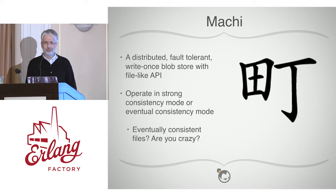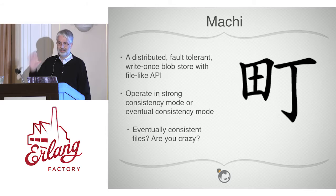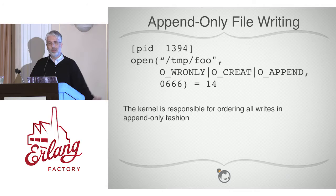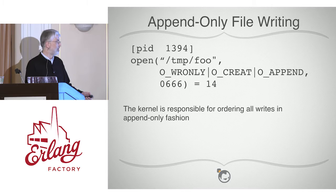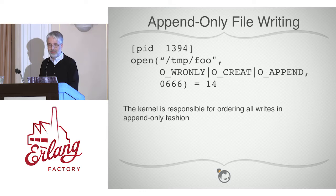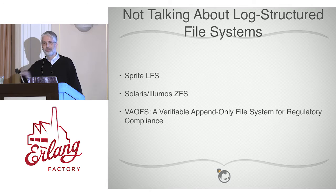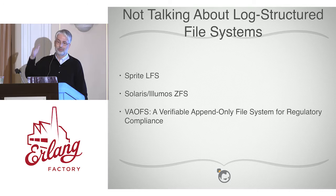People want consistency in their file stores almost always, and I want to make a case that there are times when it's not really necessary. When you're writing using a Unix or Linux system and you want to append only to a file, the kernel is responsible for ordering if you specify the O_APPEND option. We're talking about a file API — not the file system structure underneath, nothing about Sprite or ZFS.